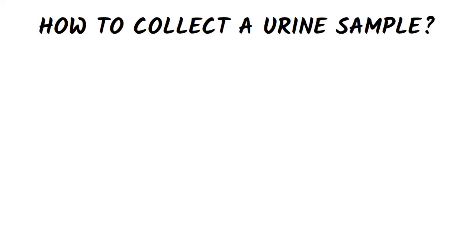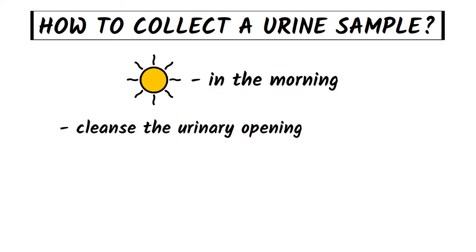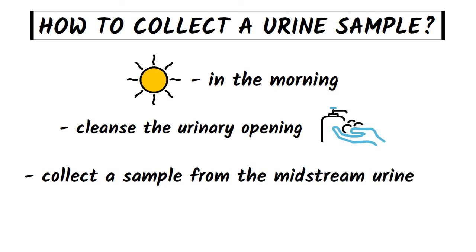A urine sample is better to be collected first thing in the morning, when the urine is more concentrated. This is how you collect it: first, cleanse the urinary opening, then begin to urinate into the toilet, because the sample you collect should be from the midstream in order to avoid bacterial contamination. Pass the collection container into the urine stream and fill about half of it.